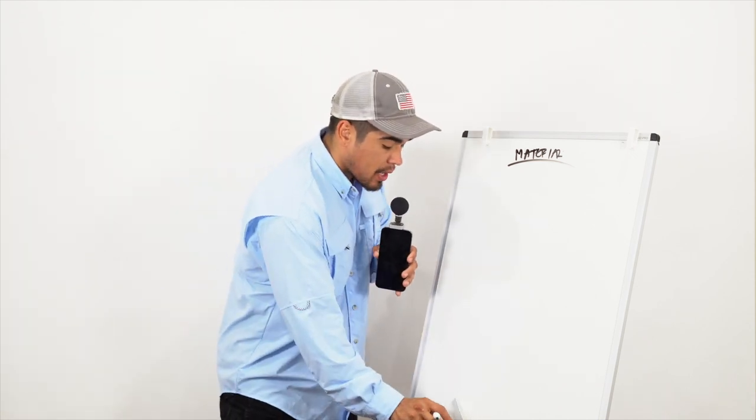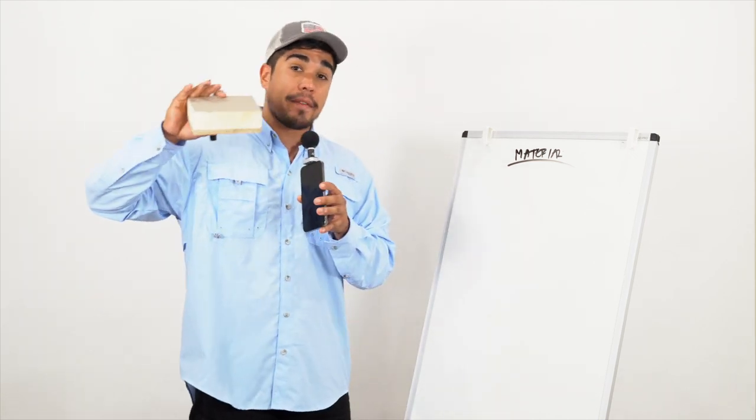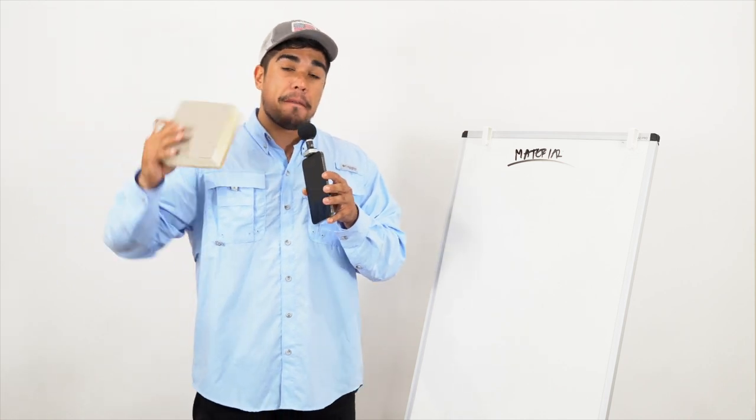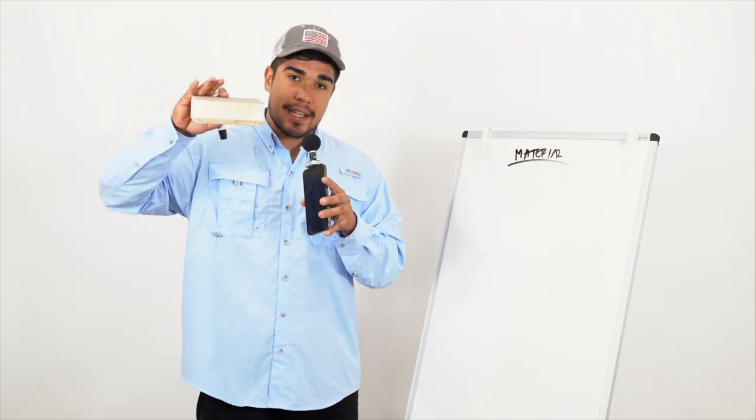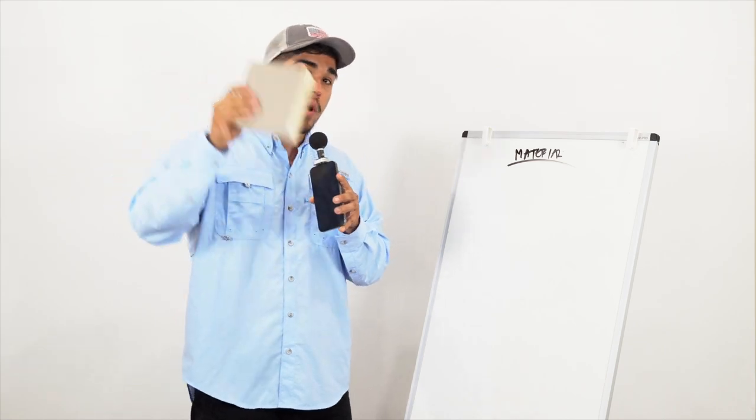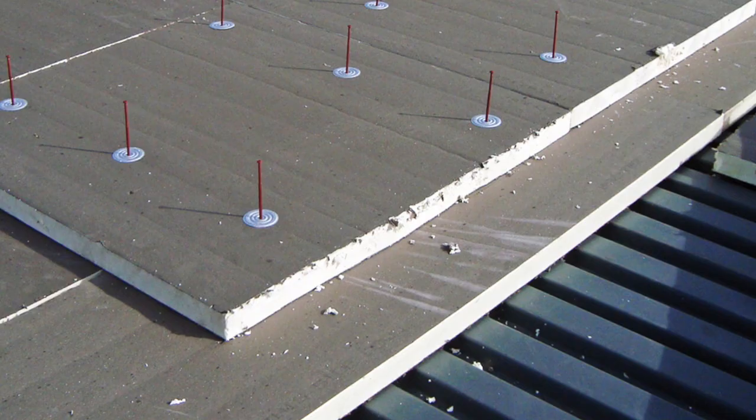For example, when it comes to insulation you have different options. You have fan fold that's very thin, half an inch, or you have insulation that's thicker like this. You can get one inch, two inches, three inches, and so on.